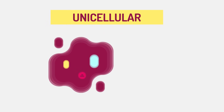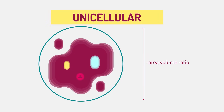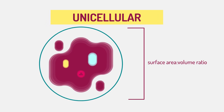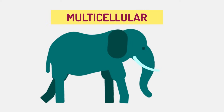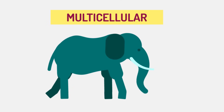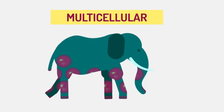Unicellular organisms cannot grow large because they are limited by a surface area to volume ratio, whereas multicellular organisms can increase the number of small cells to give a large size overall.